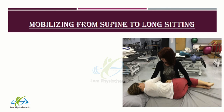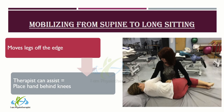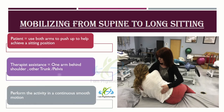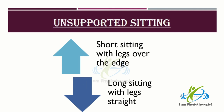Mobilizing from supine to long sitting: have the patient move their legs off the edge of the bed. If needed, you can assist the patient by supporting behind their knees. The patient can use both arms to push up to help achieve a sitting position. If needed, assist the patient by placing one arm behind their shoulder, with the other arm supporting their trunk or placed on the patient's pelvis. Remember to perform the activity in a continuous smooth motion. Always take your time and do not rush. Unsupported sitting can either be short sitting with legs over the edge of the bed, or long sitting with legs straight.